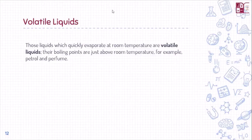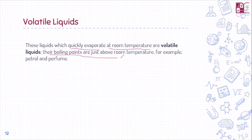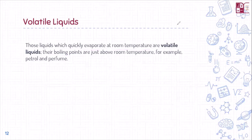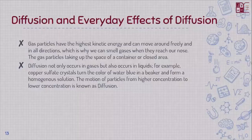Volatile liquids are those liquids which quickly evaporate — the most interesting thing is that they evaporate at room temperature. You do not even need to heat them up. Their boiling points are just above room temperature, and whenever they reach that boiling point they just evaporate. Examples include perfumes and petrol.